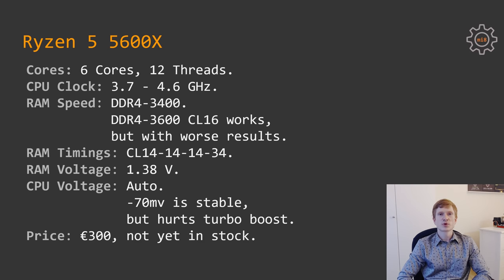To make my DDR4-3400 CL14 work stably, I had to increase memory voltage to 1.38 volts — an absolutely safe voltage; stock is 1.2V and XMP is 1.35V. CPU voltage was left on auto, but I also tested undervolting the Ryzen 5 5600X. It was stable at minus 70 mV offset, but this hurt Turbo Boost frequencies and overall results were slightly worse, even though the CPU ran cooler and consumed less power.